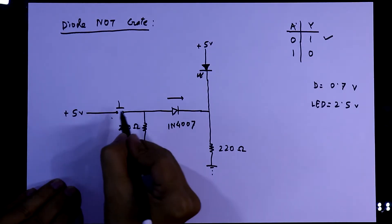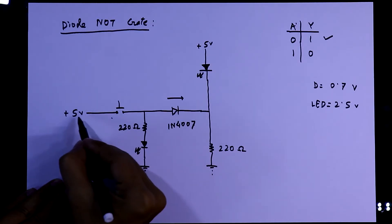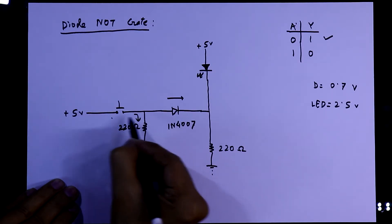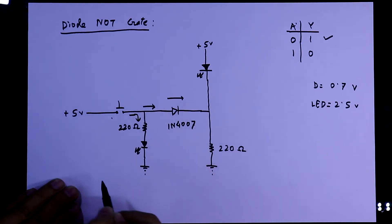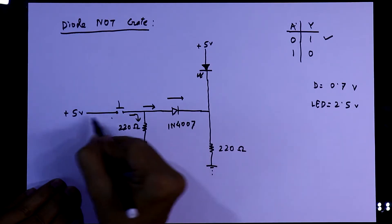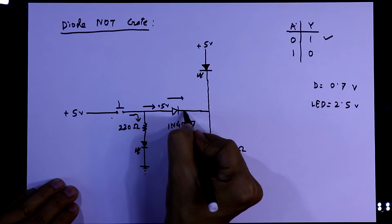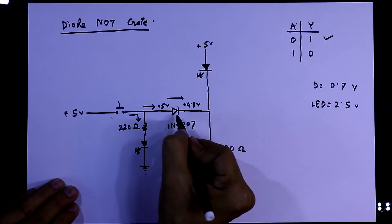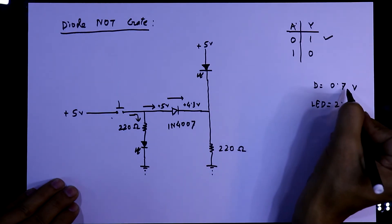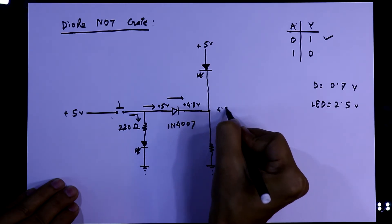And when we turn on the switch, then this LED will glow because now current will flow in this direction and also in this direction. Till this, the voltage is plus 5 volt. And in this position, the voltage will be plus 4.3 volt because it has a voltage drop of 0.7 volt. So here it is 4.3 volt.